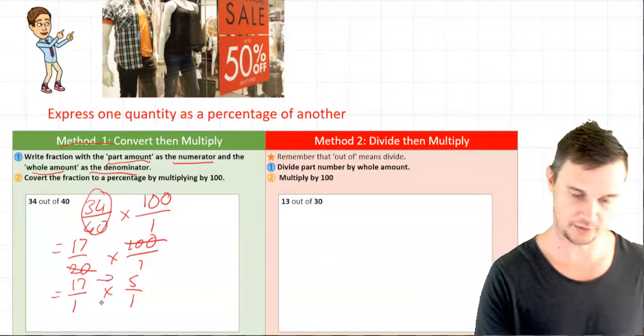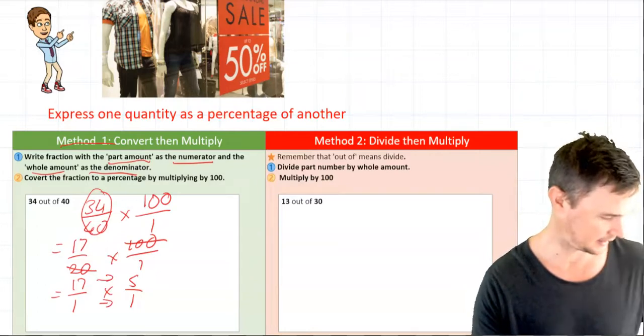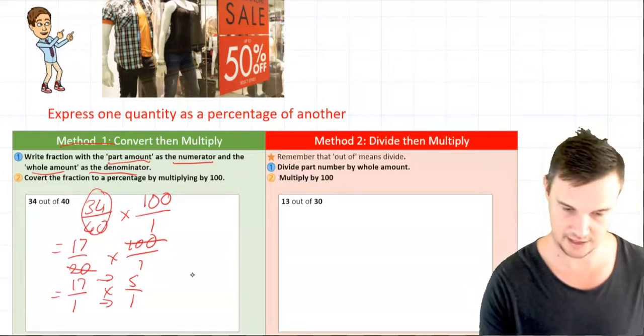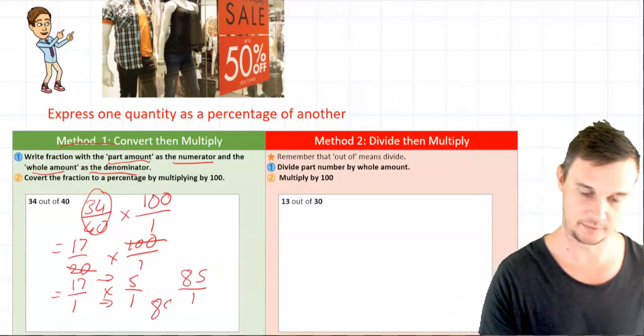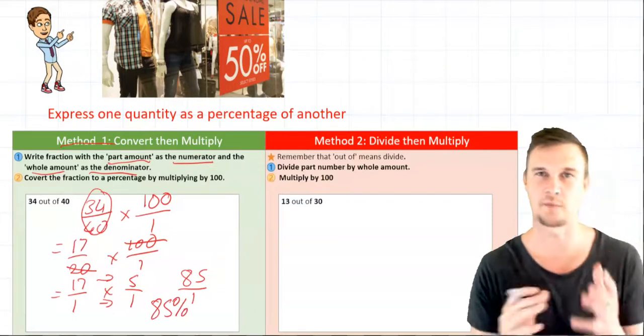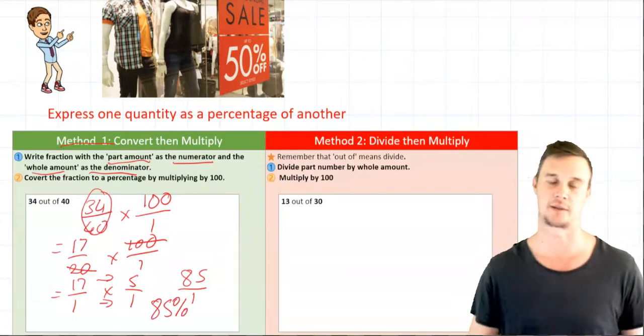When we're multiplying fractions we multiply the top by the bottom and that gives us the answer of 85 over 1, which we know means 85 percent. Okay, so if you're confident with using fractions, I'll recommend that method.